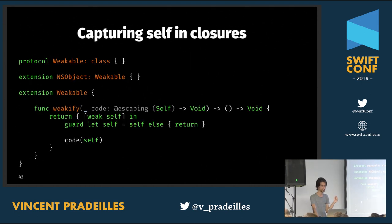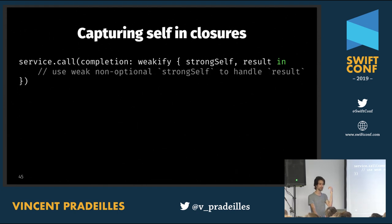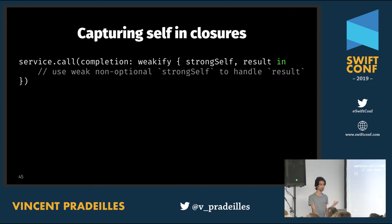We can add a generic parameter of type `A` to handle completion handlers that take arguments. When we call our code, we give it both the self instance and the value of type `A`. Now, reworking a service call, we no longer write `[weak self] guard let self = self` — we just put `weakify` in front of the closure. Inside the closure we receive a strong self reference directly, plus the result parameter from the completion handler. All the boilerplate is encapsulated within `weakify`.